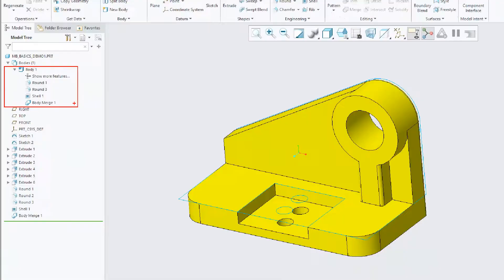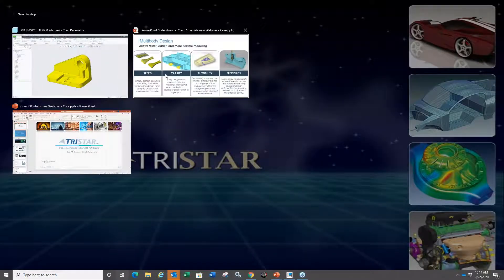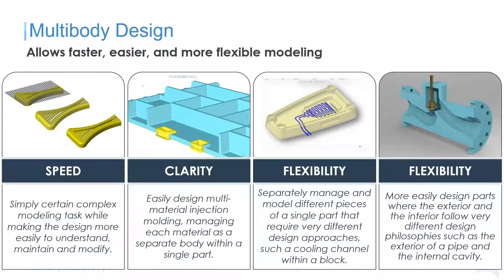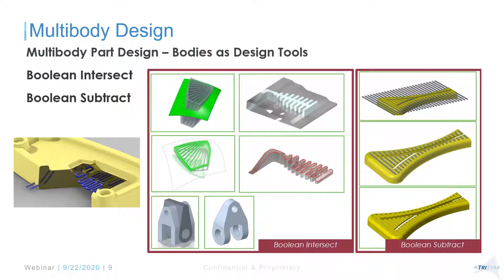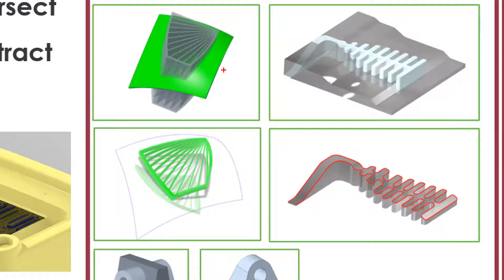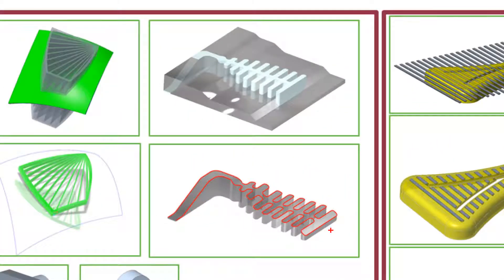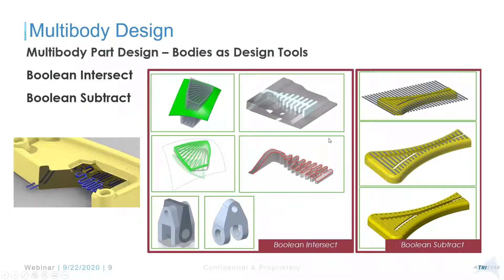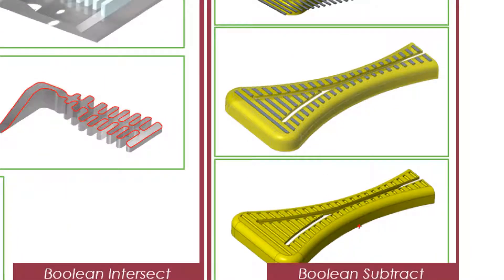Multi-body can also be used as a tool for Boolean-based operations that we used to do using quilts, surfacing, and several features. For example, I can use a Boolean intersect to create 3D geometry for a cooling channel — just add two bodies, create an intersect of body to body, and it's done. This replaces traditional surfacing techniques, especially for engineers who find the quilt-based methodology difficult to edit.